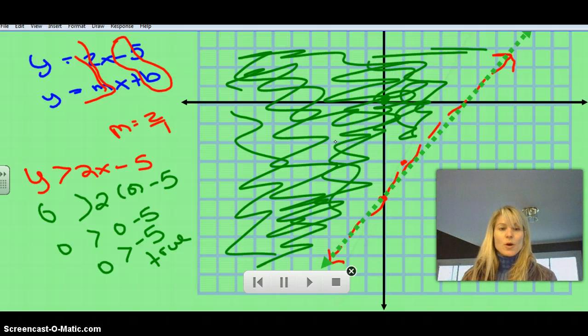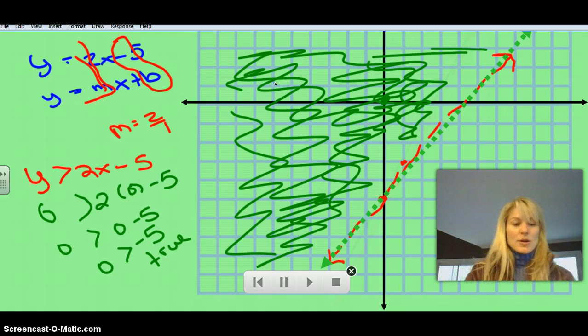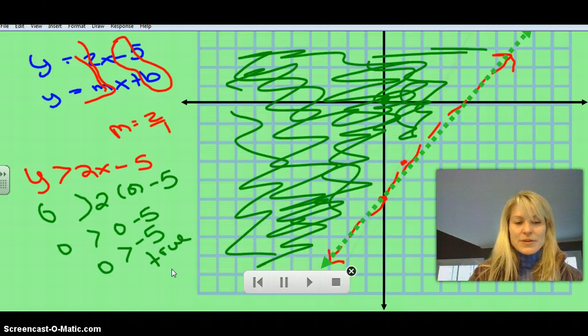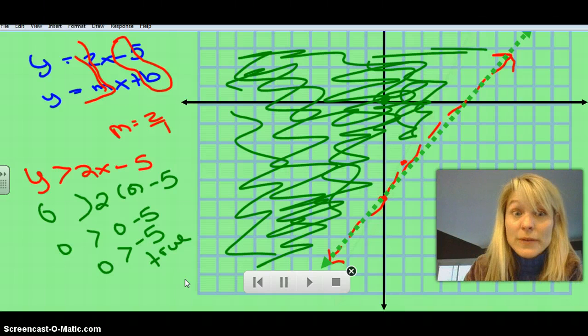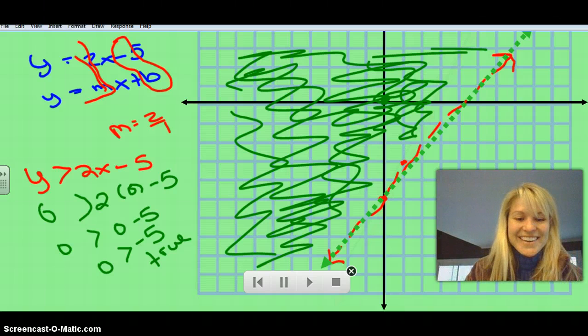So for your homework tonight, you just need to make sure that you have these two examples written down and make yourself a little note about the test point. And then we're going to do some practice problems when you come to school tomorrow. So I hope you have a great evening. And I'm sorry I don't have a funny face on. I just didn't have time today. I will do a funny face tomorrow. I promise. Good night.